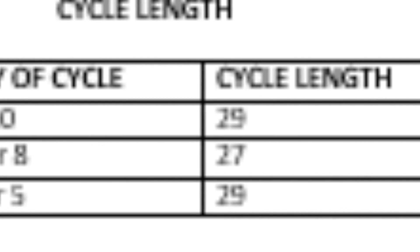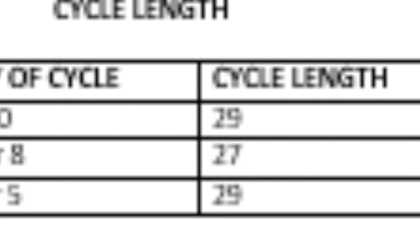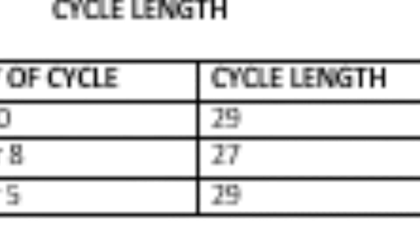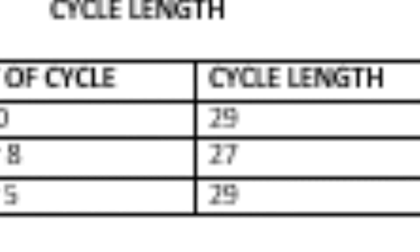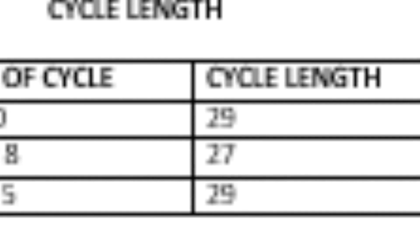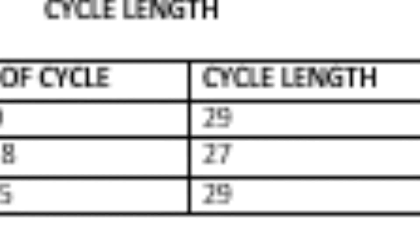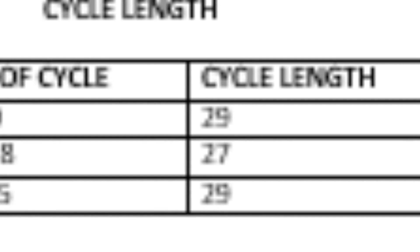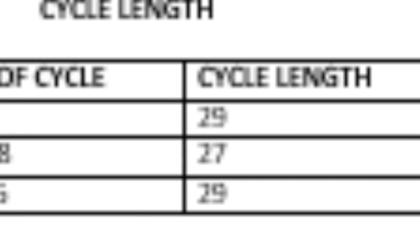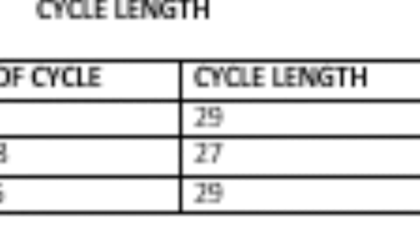To calculate the first fertile day of your cycle you'll need to subtract 18 from the length of your shortest cycle. In this example it can be seen that November had the shortest cycle with 27 days. So subtracting 18 from 27 gives 9 — the ninth day of your cycle will be your first fertile day.